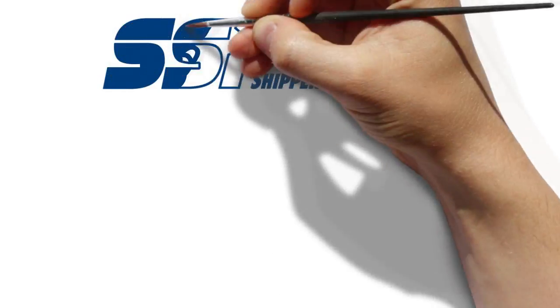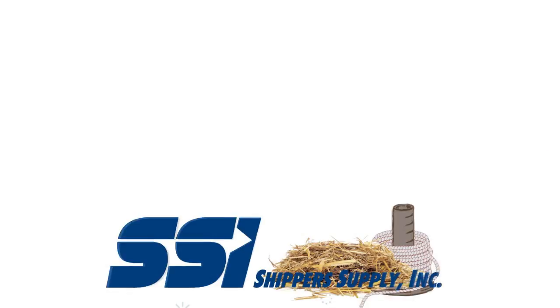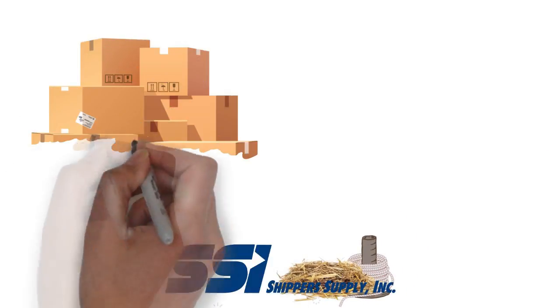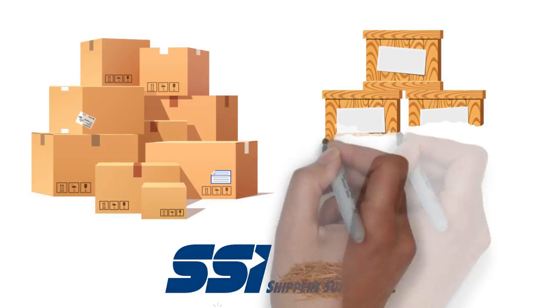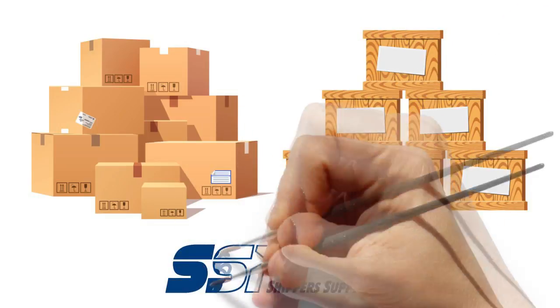Shipper Supply has been engineering positive impressions since 1928. From our early offerings of straw and twine to present-day engineered foam, corrugated, automation, and wide variety of industrial solutions, SSI has evolved as an organization.